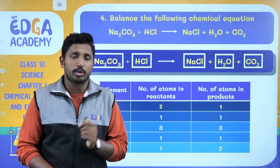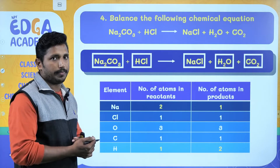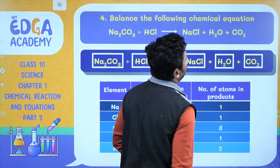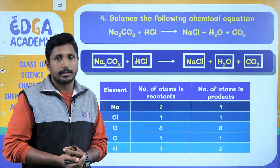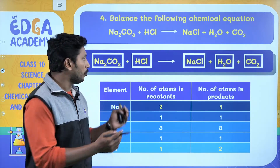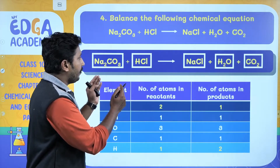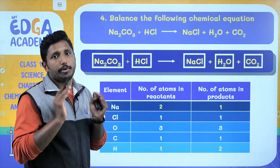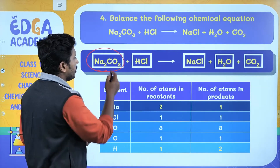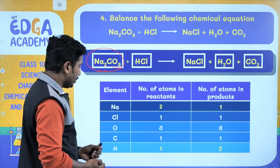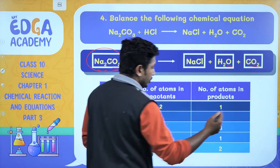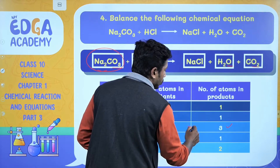Moving towards our fourth question: balance the following chemical equation — Na2CO3 + HCl gives NaCl + H2O + CO2. We have already learned how to balance a chemical equation in seven steps. The first step is to place all the molecules in different boxes. Next, find the molecule having the highest number of atoms. In this equation, Na2CO3 has the highest number of atoms, and oxygen has the highest count — 3 atoms on the left hand side and 1+2=3 on the right hand side, so oxygen is balanced.